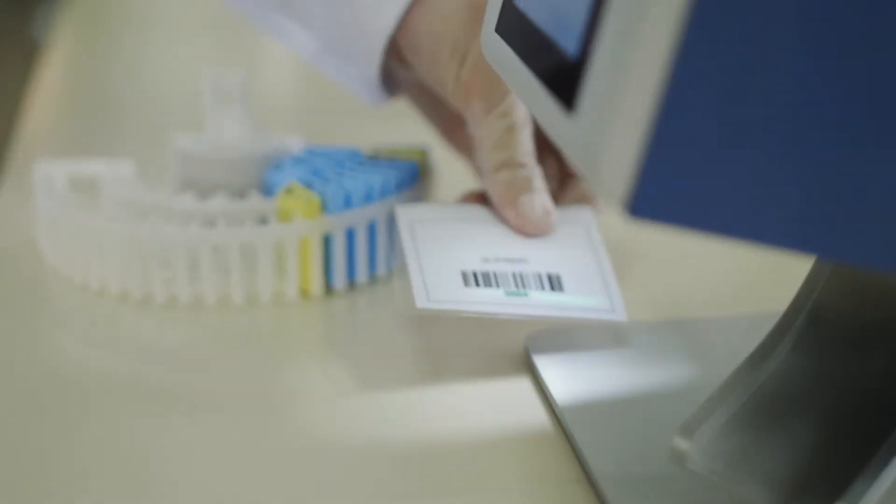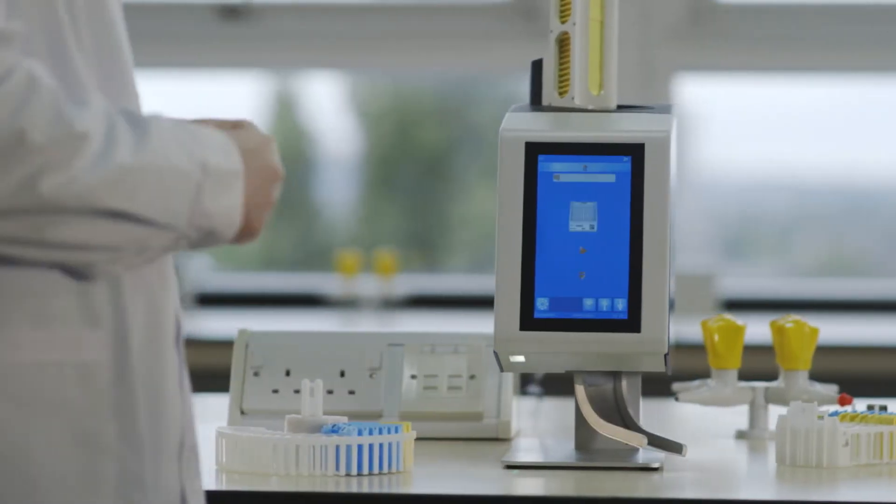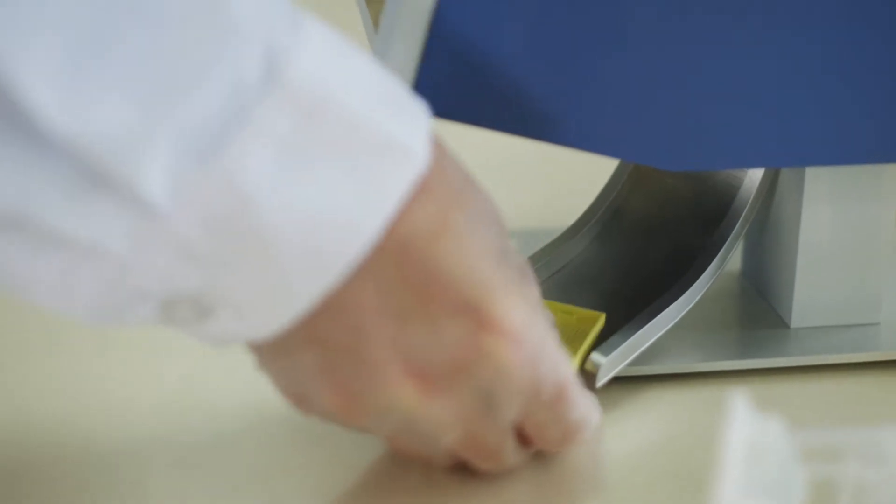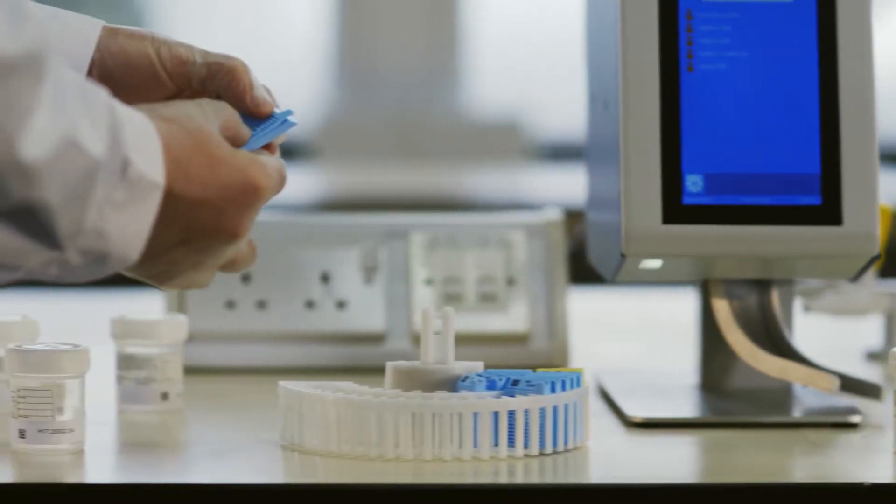The user can log on to the printer by using their badge or by entering a pin number. The printer then records all scans and prints against the user name. The user initials can be automatically printed on the cassette.